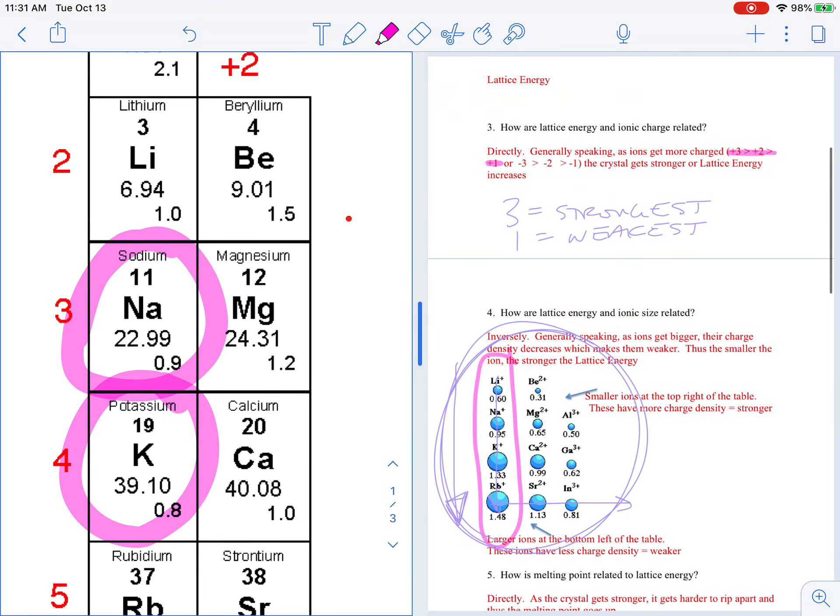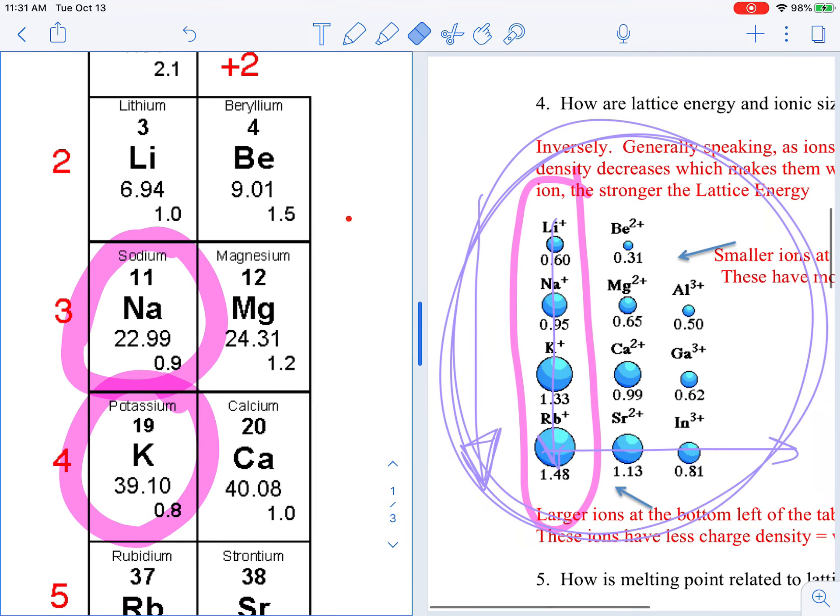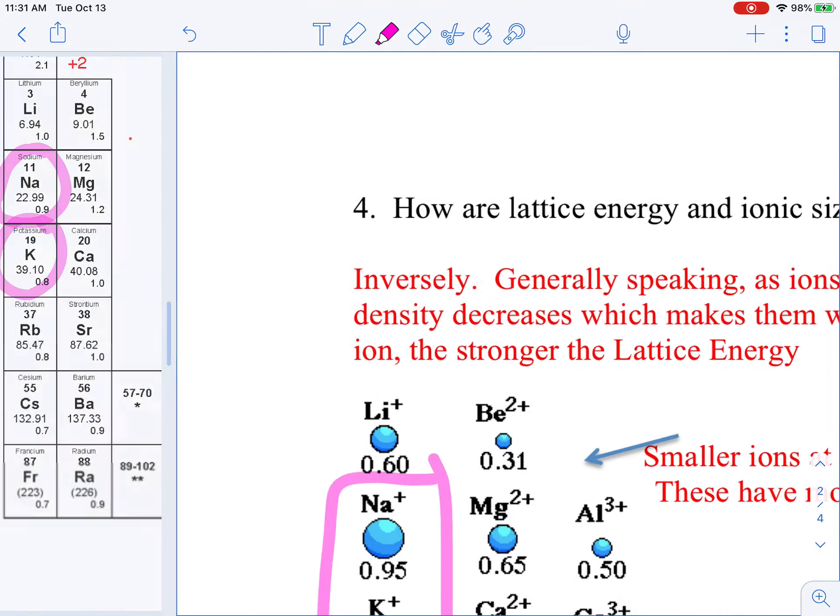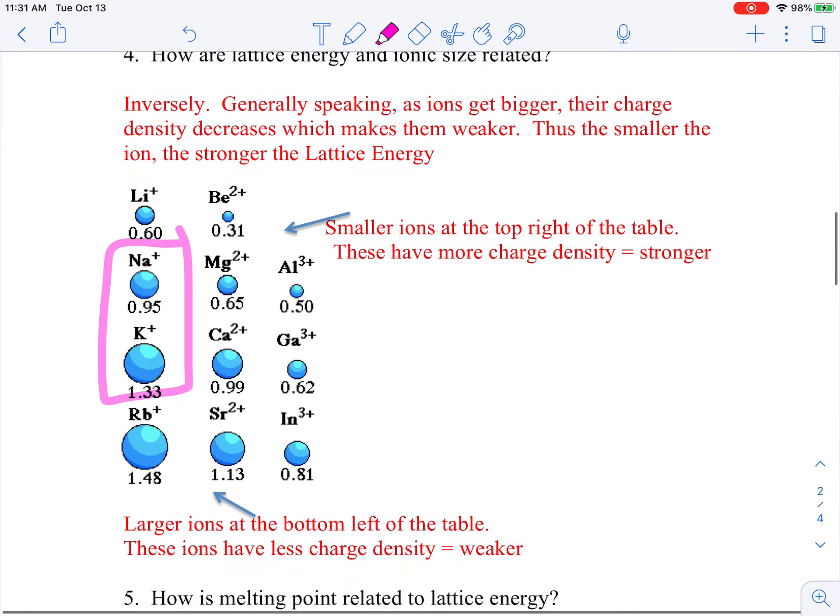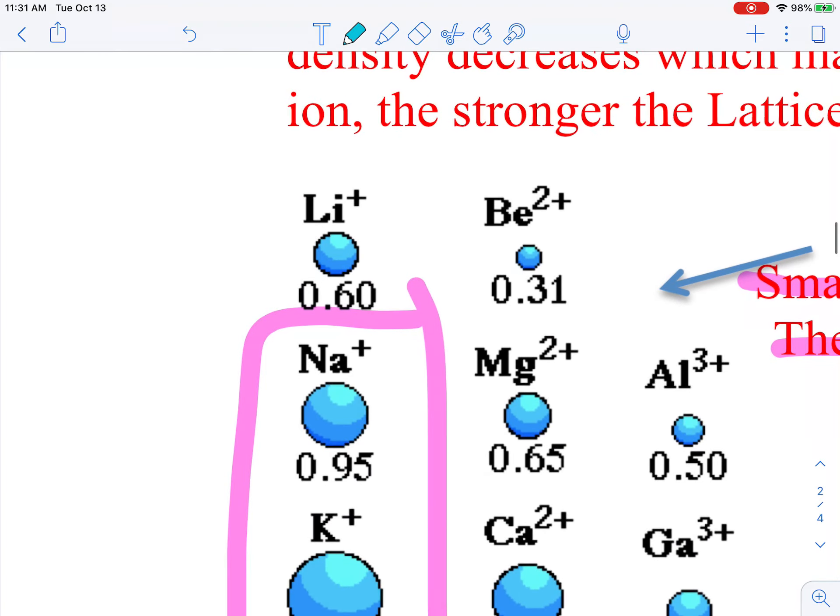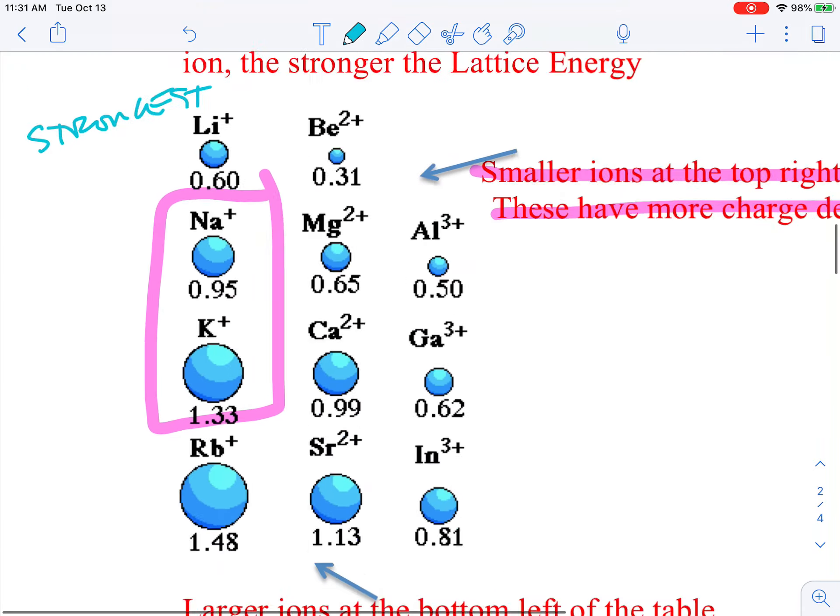Well, we already talked about this. Na is above K. So when we look at this, it gives us this note, smaller ions at top, they have more, they're stronger. So let's write this out so we can have this. These are the strongest and these are the weakest.